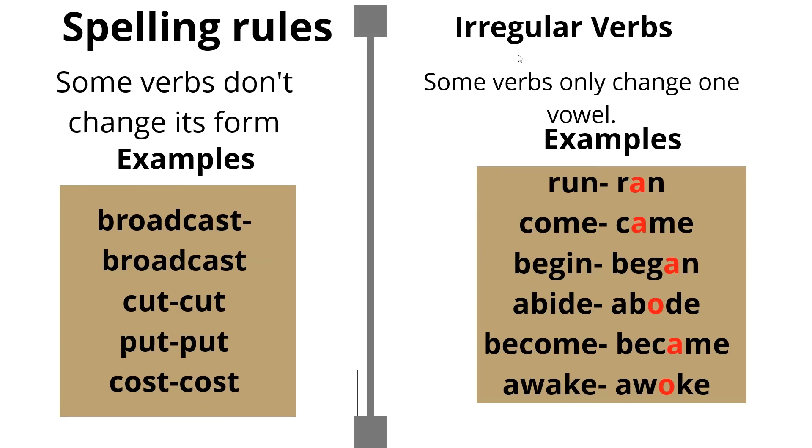Spelling rules for irregular verbs. Some verbs don't change its form. For example, broadcast, broadcast. So today I will broadcast, yesterday I broadcast. Today I cut, yesterday I cut. Put, put. Cost, cost.